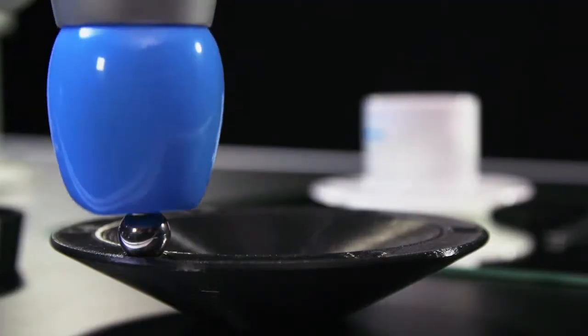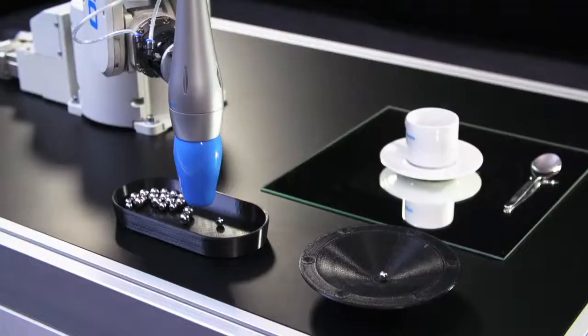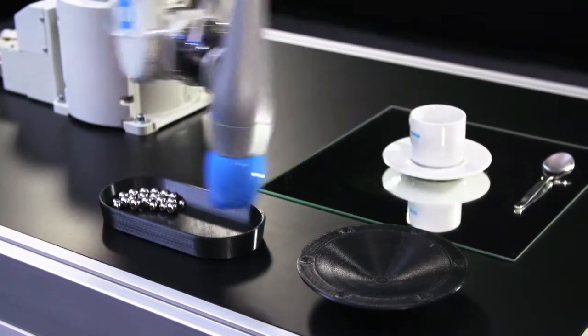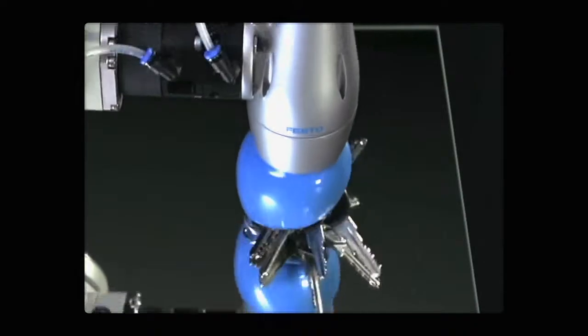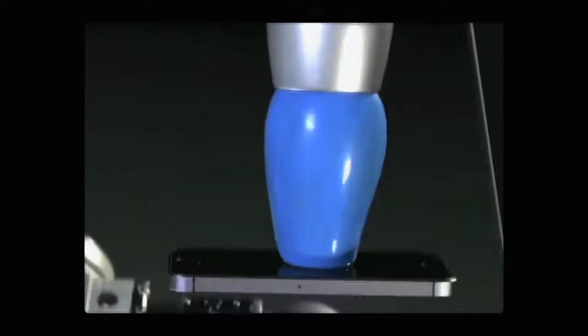The soft chameleon gripper is not only able to transport several objects at the same time but also able to grab a wide range of items. For example, the gripper could grab keys, credit cards, smartphones, screws, valves, nuts...